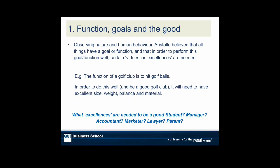Aristotle is really saying that everything has a goal or a function, and that if we're going to perform that goal or function well, you need some excellences — some attributes of the thing. What we're going to do in a moment is extend this idea from things to people. But let's take the example of golf clubs, and we could also look at a knife. The function of a golf club is to hit golf balls; the function of a knife is to cut.